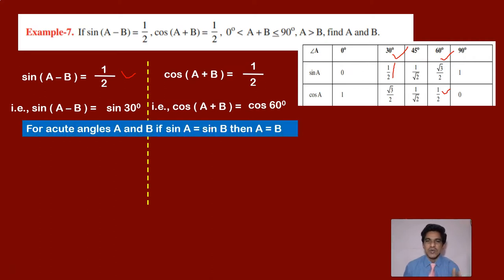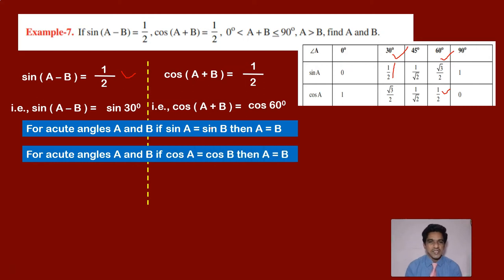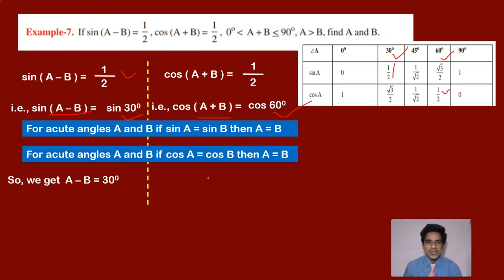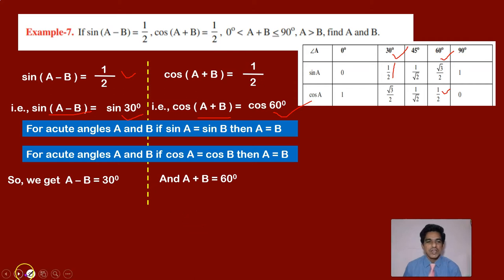We use the concept: if sin A equals sin B for acute angles, then A equals B. Similarly, if cos A equals cos B for acute angles, then A equals B. Applying this, A minus B equals 30 degrees and A plus B equals 60 degrees. So we have two linear equations in two variables A and B.